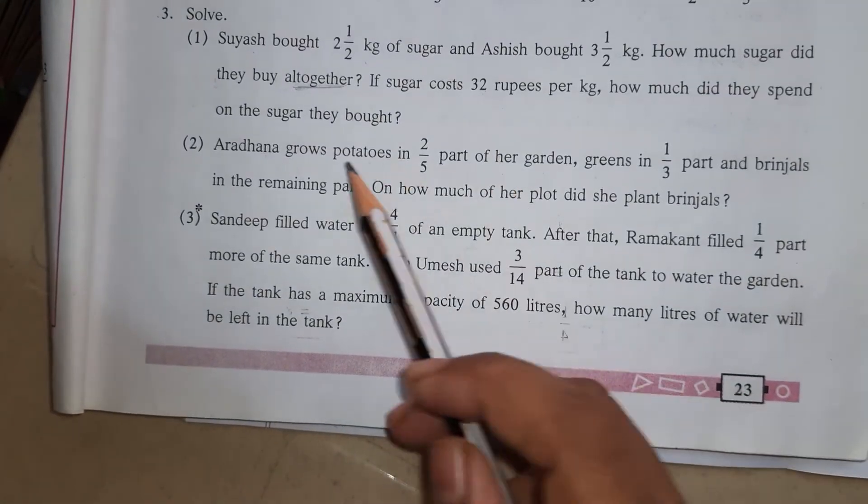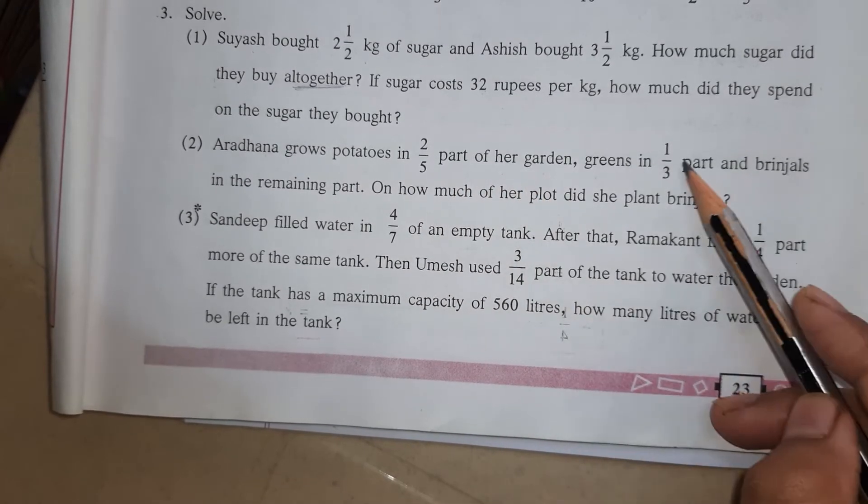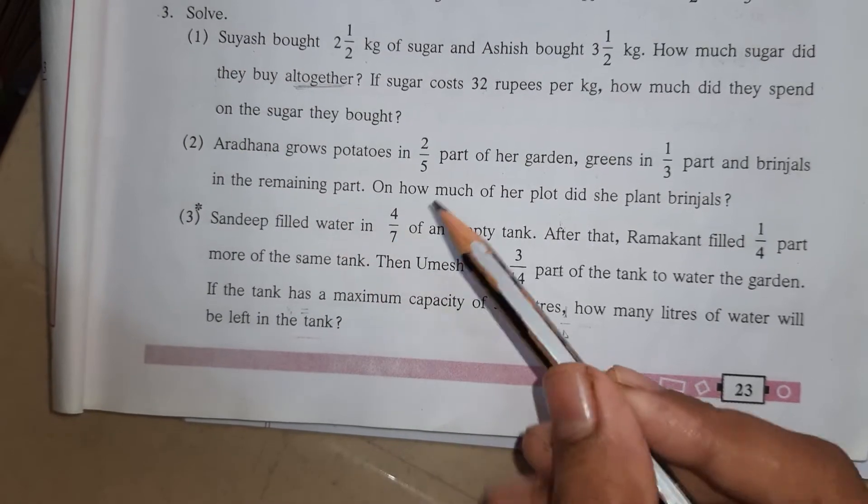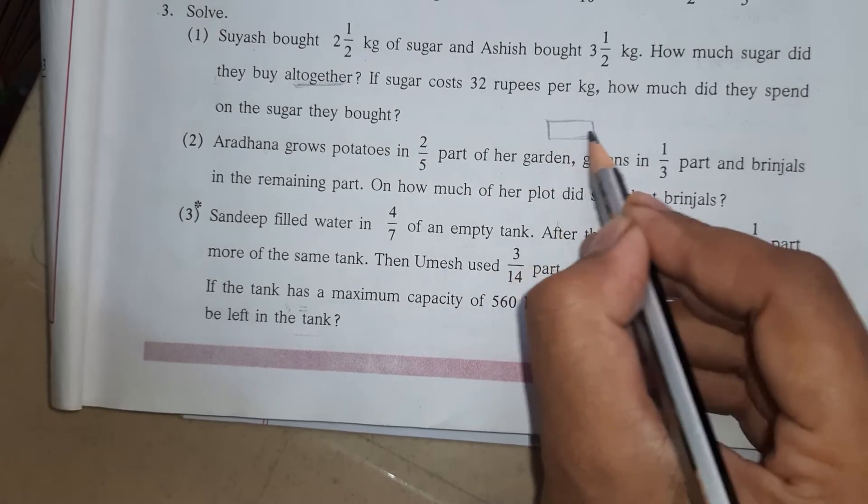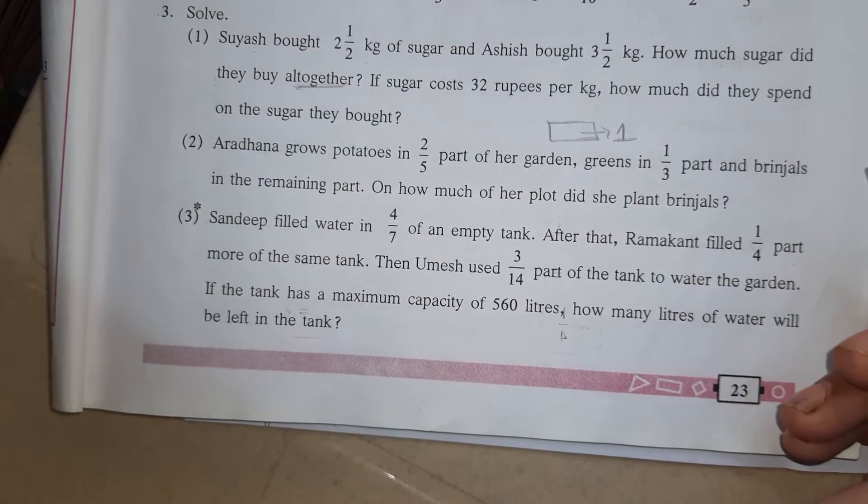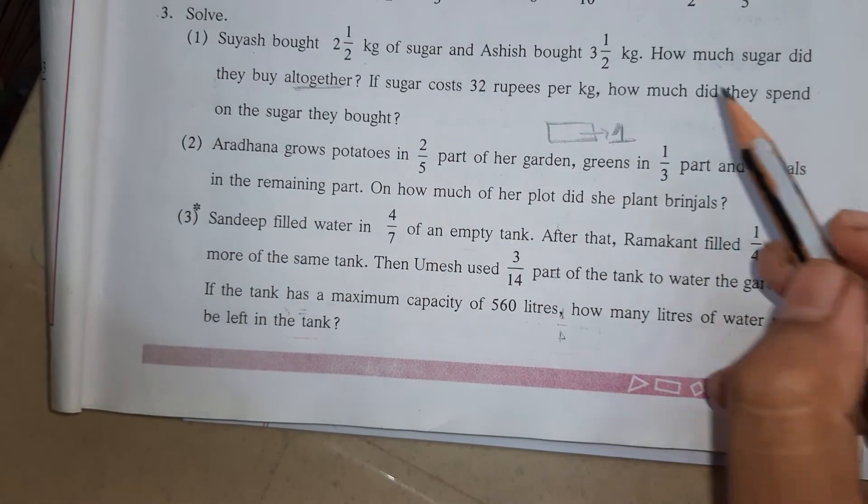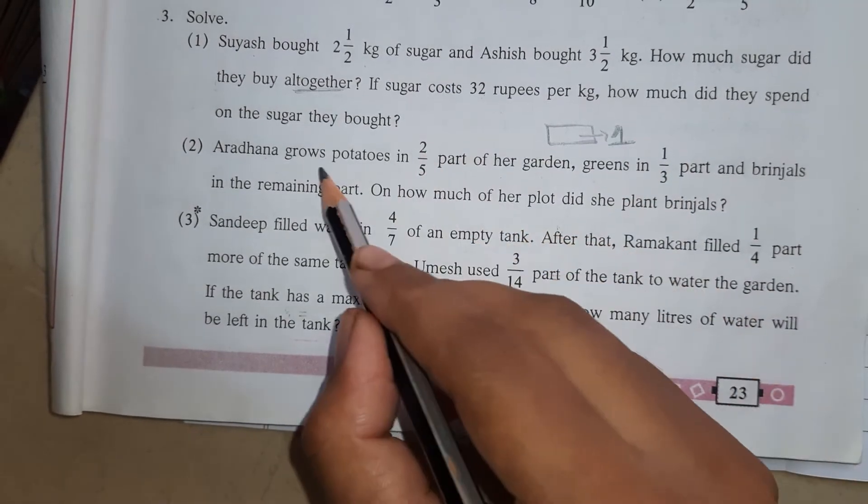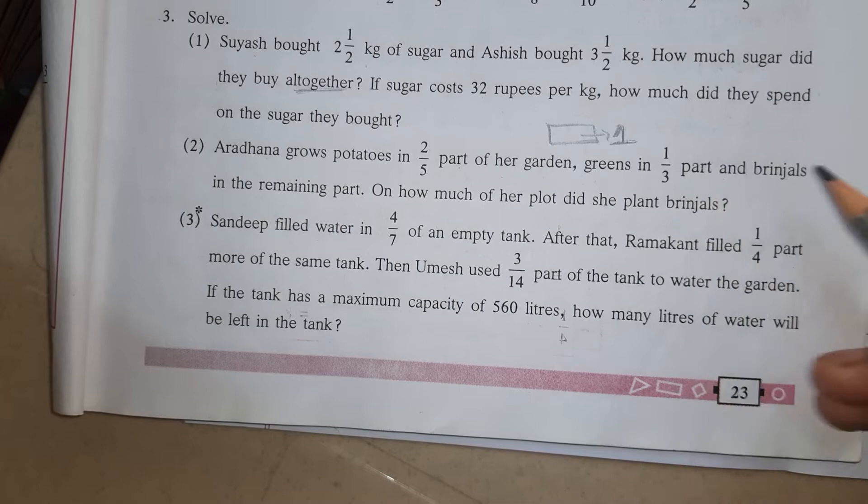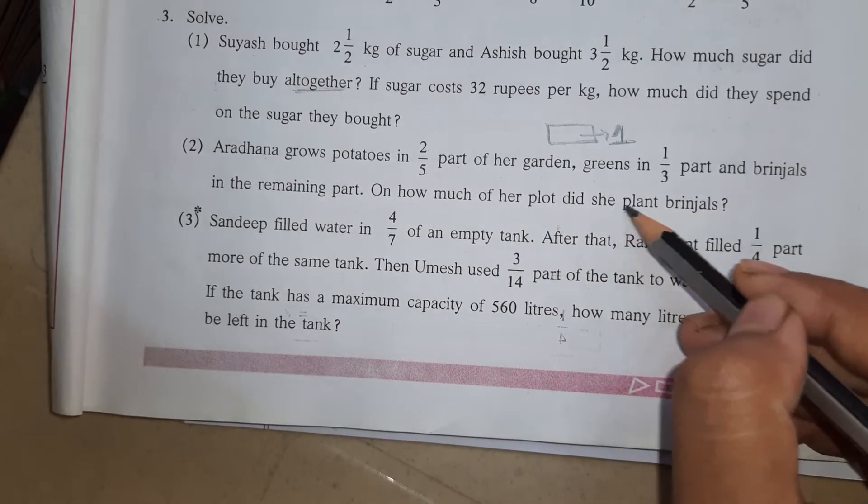Now the second question. Aradhana grows potatoes in 2/5 part of her garden and greens in 1/3 part of the garden and brinjals in the remaining part. So total part of her garden will be, this will be taken as 1 whole, okay. In the fraction language if we are talking, then complete garden means 1. Anything whole means 1. So in 1 garden, she grows potatoes in 2/5 part and greens, greens means leafy vegetables in 1/3 part and brinjals in the remaining part. So on how much of her plot did she plant brinjals?